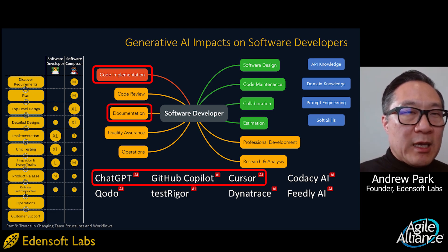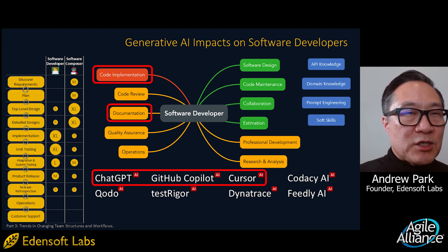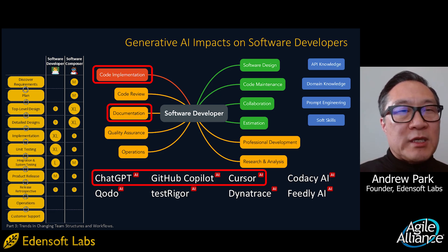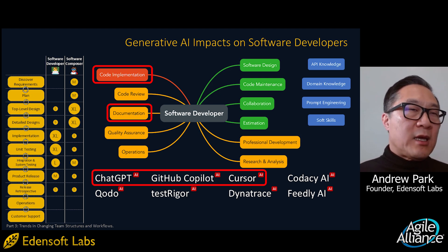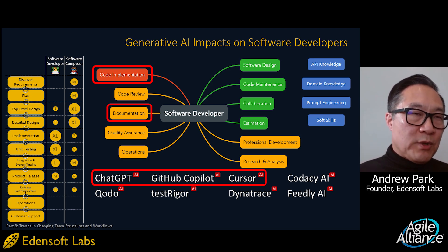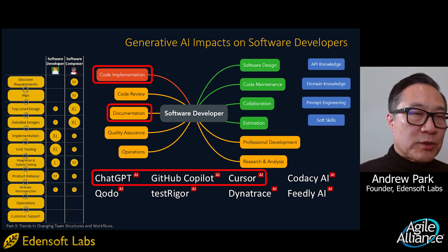Let's look at this mind map. I'm highlighting certain things in it — in this case, code implementation and documentation. We're dealing with software developers here. This is a mind map of all the different kinds of tasks that the software developer deals with, and what I'm showing is certain tools that help with certain tasks.